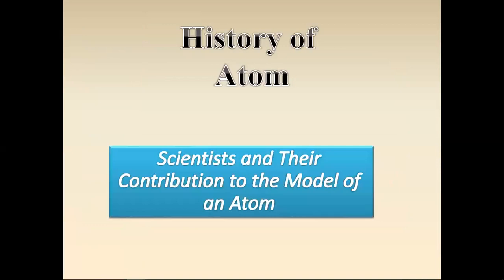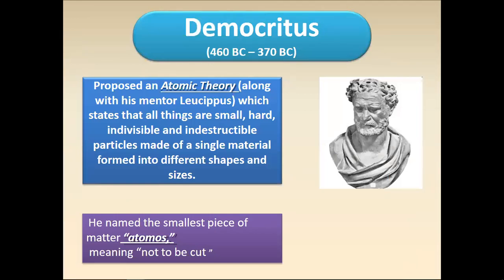At first, the history of atom. Various scientists have contributed to introduce different models for the atom. We discuss Democritus, who proposed an atomic theory following his mentor Leucippus, which states that all things are small, hard, indivisible, and indestructible particles made of a single material formed into different shapes and sizes. He named these small pieces of matter as atoms.